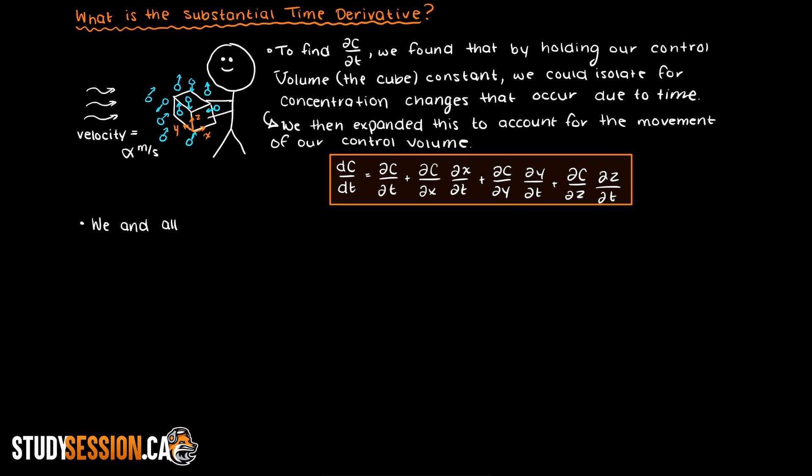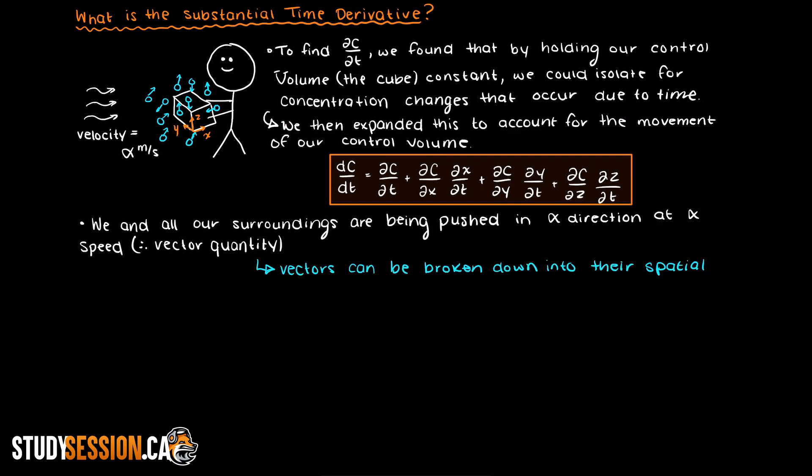So we and all of our surroundings are getting pushed at the velocity of the air flow. Just note that alpha is a velocity, so it has a magnitude, which is how fast it is pushing everything, and a direction, and is therefore a vector quantity. This is important as it means that we can break the velocity of our movement down into its constituent components, kind of like we did for the total time derivative. Therefore, we can write the substantial time derivative for our above problem like so.